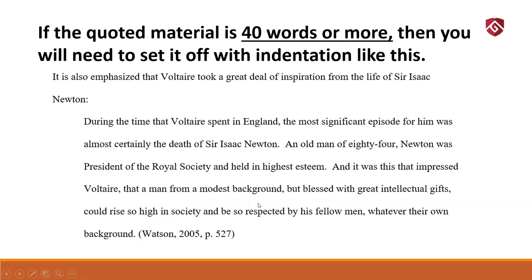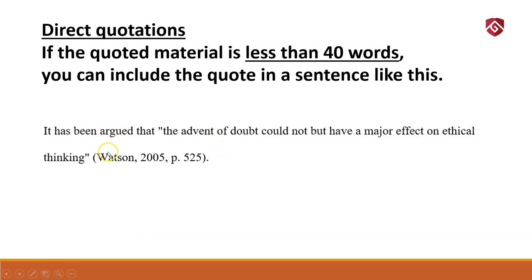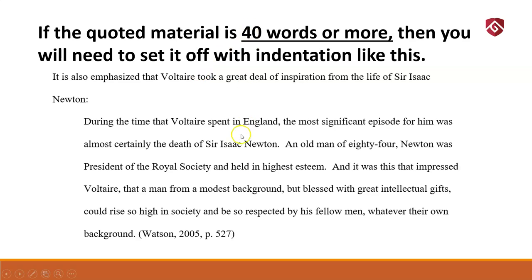Just as soon as you got used to the period going at the end of the parentheses, in this case — this is the only exception I know of — the period goes at the end of the long quote. Then you give us the parentheses and page number. Generally speaking, in parenthetical in-text citation the period goes at the end of the parentheses, but with a large block quote the period goes at the end of the quote, then the parentheses with the year and page number. For a student paper, I would use these very sparingly, if at all. Check with your instructor, as a lot of instructors don't like many direct quotes, because a few of these can take up a number of pages in a required 10-page assignment.